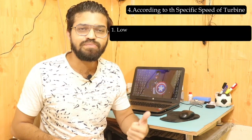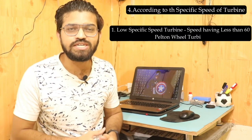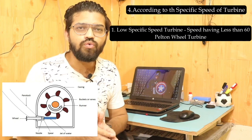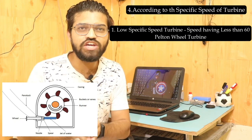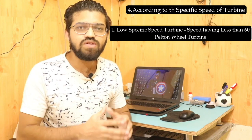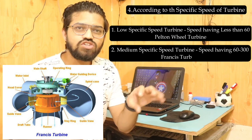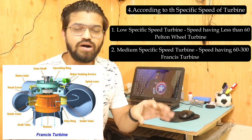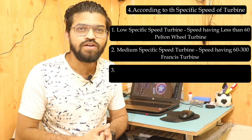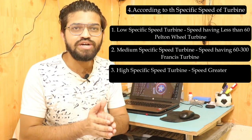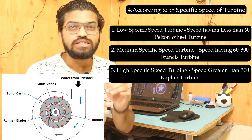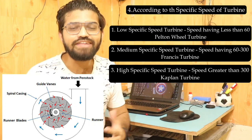The fourth classification is according to the specific speed of the turbine. Specific speed can be low, medium, or high. For lower specific speeds — less than 60 — the Pelton wheel turbine is mostly suitable. For medium specific speed in the range of 60 to 300, the Francis turbine is suitable. For higher specific speeds — around 300 or greater — the Kaplan turbine is majorly suited.